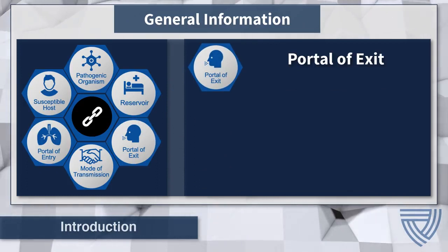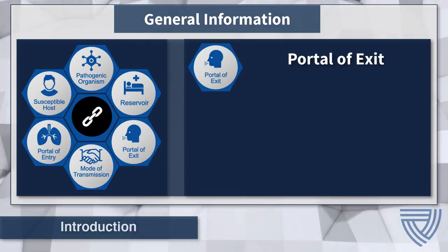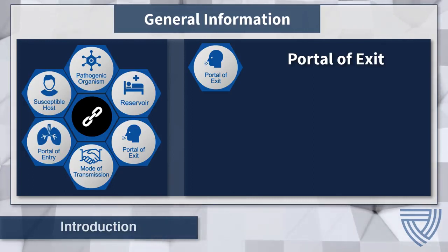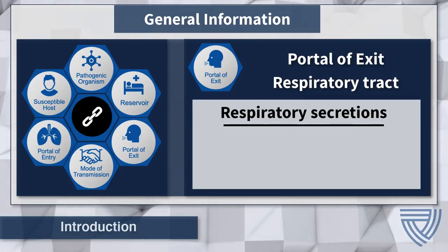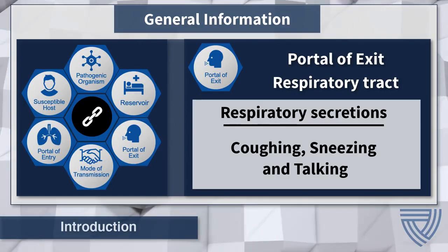The portal of exit in the chain of infection is the path by which a pathogen leaves its host to infect others. For COVID-19, the portal of exit includes the respiratory tract via respiratory secretions when a patient coughs, sneezes, or talks.